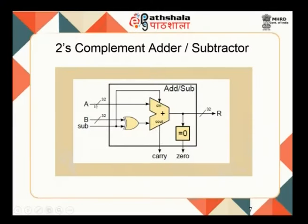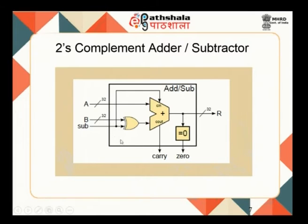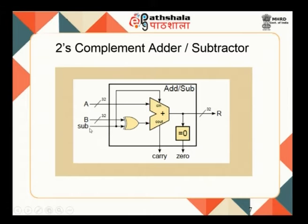It is enough to have a combined adder-subtractor unit. In this circuit, one input to the full adder is given as such. The second input is XORed with a control input called the sub bit. If you have to perform a subtraction, you make this bit 1; for addition, you make it 0. When the sub signal is 0, B is passed as such without any changes.